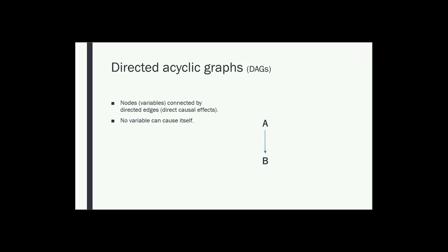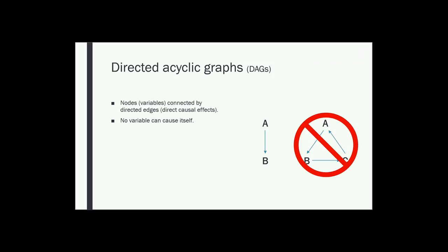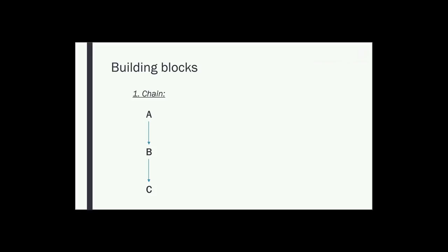The only prohibition in a DAG is that no variable can cause itself — you can't have A causing B causing C which in turn causes A, because this would create a cycle, and DAGs are by definition acyclic. A DAG represents the hypothesized data generating process — the process by which different variables obtain their values. DAGs can be as simple or complex as you'd like, but they're all made up of three basic causal structures: a chain (A causes B and B causes C), a fork (B causes both A and C), and a collider (A and C both independently cause B).